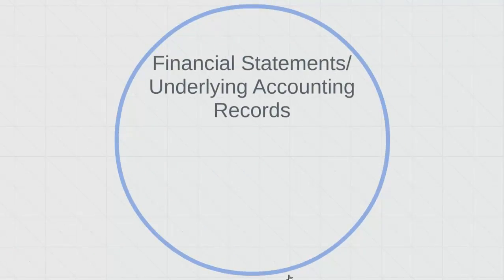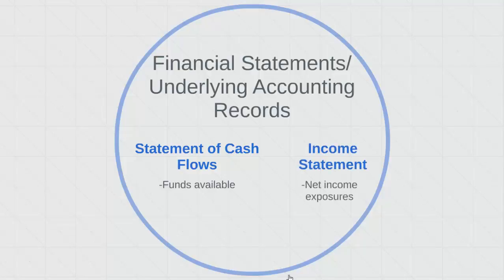Now let's discuss how financial statements and underlying accounting records might be used to identify loss exposures. For example, the statement of cash flows could be useful to determine funds available for paying for retained losses. The income statement helps to identify net income exposures. The balance sheet can help with both property and some liability exposures. For example, asset entries on the balance sheet might show property that exists, and obligations such as mortgage payments might indicate potential liability exposures. All three of these statements can help to identify how much source of funds the organization has to pay for losses as they occur.